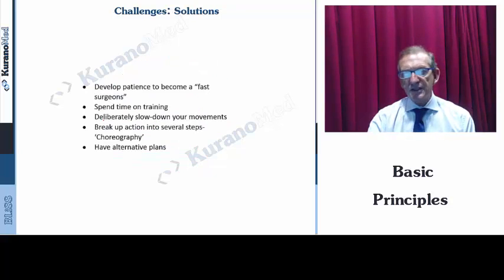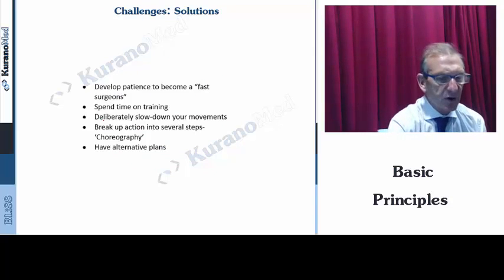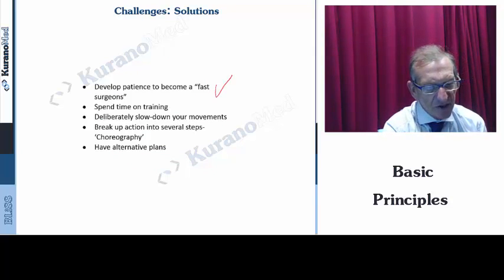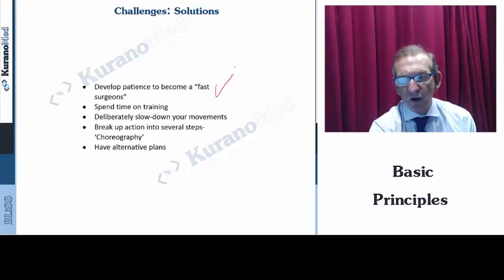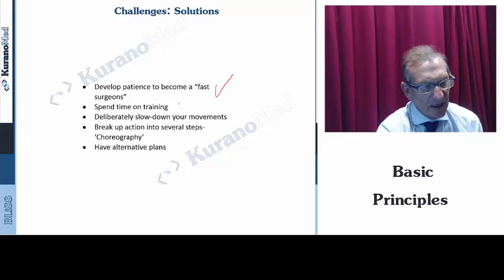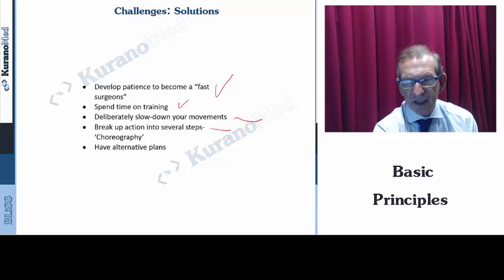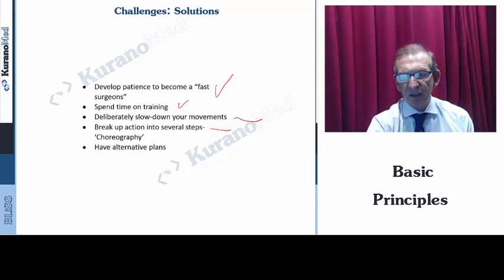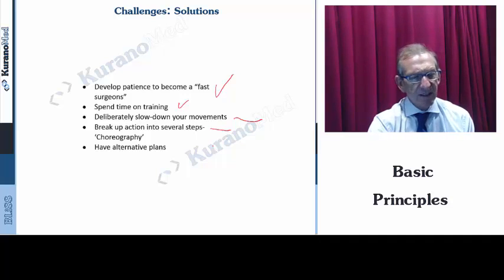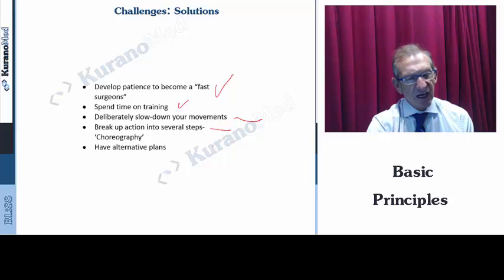What are the solutions to these challenges? The most important thing to become a fast surgeon is to be patient, to train, to develop patience, and to develop our own standards and steps by spending time on training, slowing down movements, and breaking up surgical actions into several steps. Most important is to have choreography not only with ourselves but with the entire surgical team. Always have an alternative plan when working with technology.